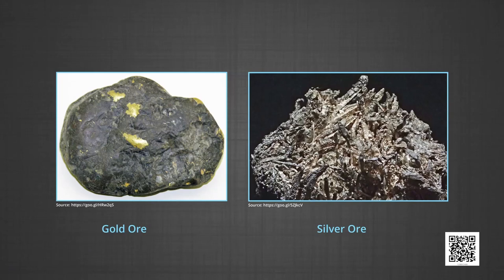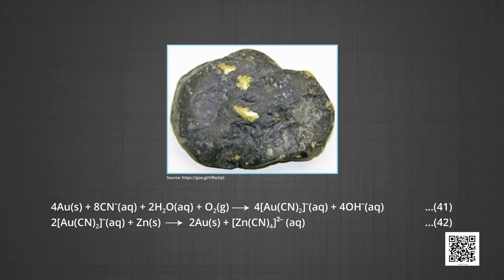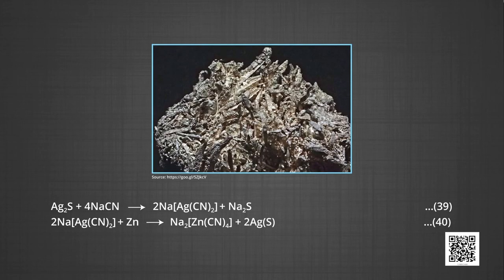Now let us understand extraction of gold and silver. As studied earlier, extraction of gold and silver involves leaching the metal with cyanide, which is also an oxidation reaction — silver is oxidized to silver ions and gold is oxidized to gold ions. The metal is later recovered by displacement method, which is a reduction process, where zinc acts as a reducing agent. The reaction is: 4Au + 8CN⁻ + 2H₂O + O₂ → 4[Au(CN)₂]⁻ + 4OH⁻. The gold cyanide complex then reacts with zinc to form gold and tetracyanozincate. In the same manner, silver is also obtained.